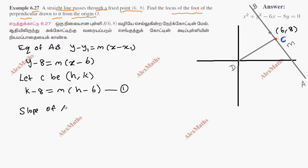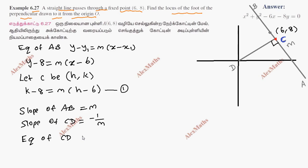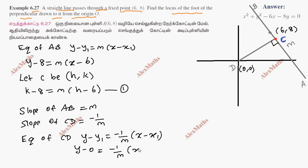The slope of AB is M. Since CD is perpendicular to AB, the slope of CD is the negative reciprocal, which is minus 1 over M. The equation of CD, passing through the origin (0, 0), is Y minus 0 equals minus 1 over M times (X minus 0).